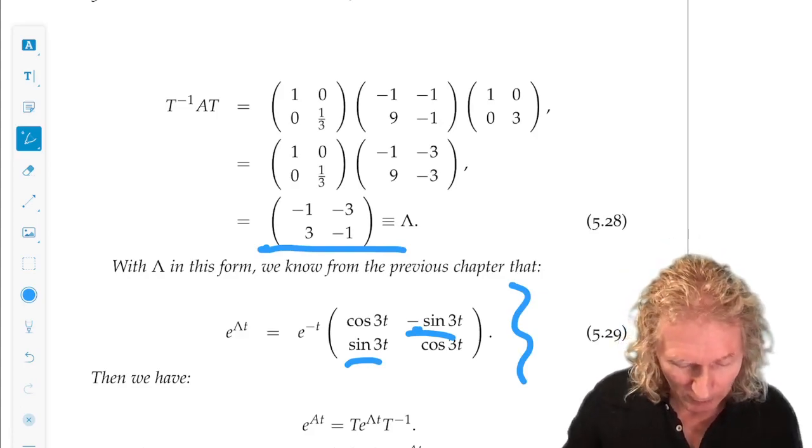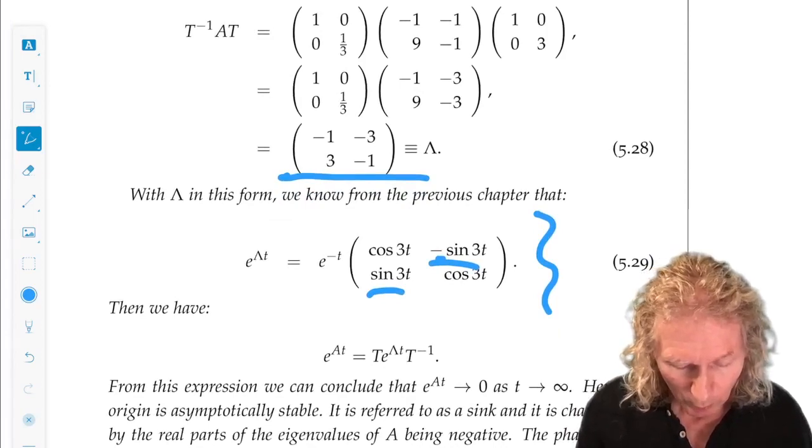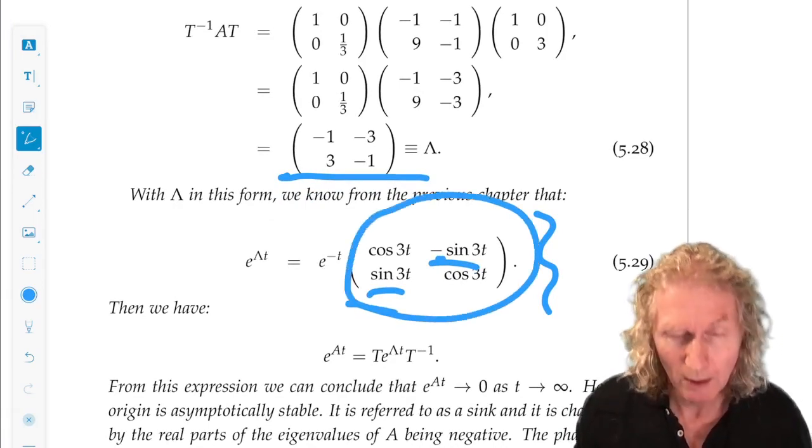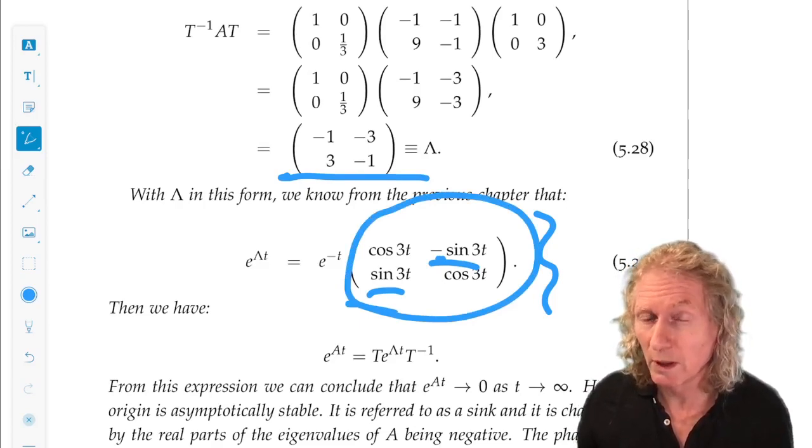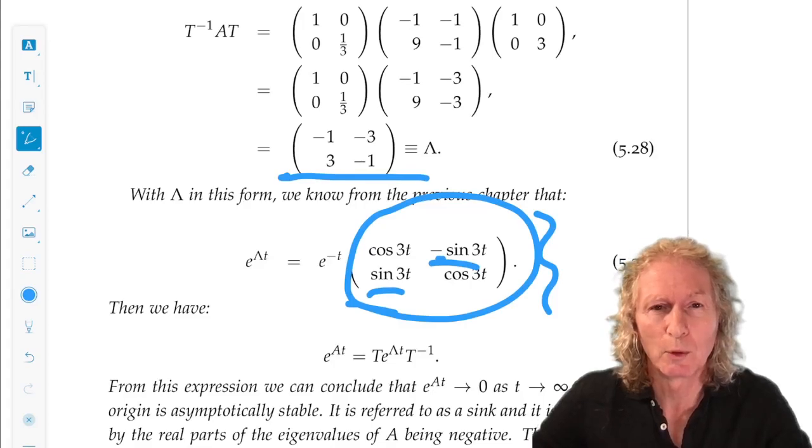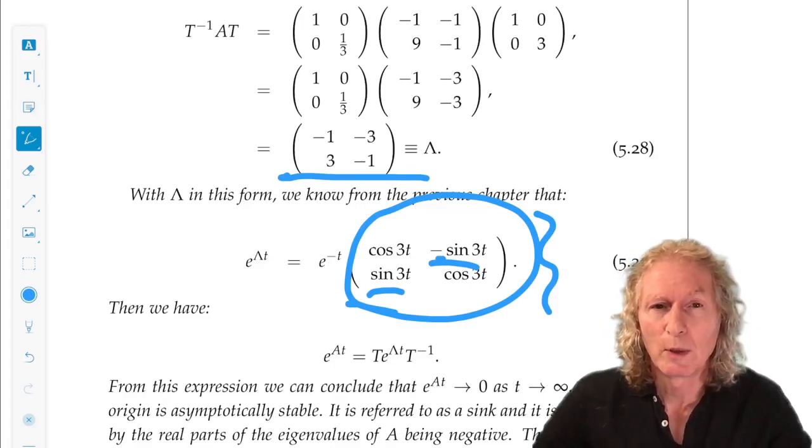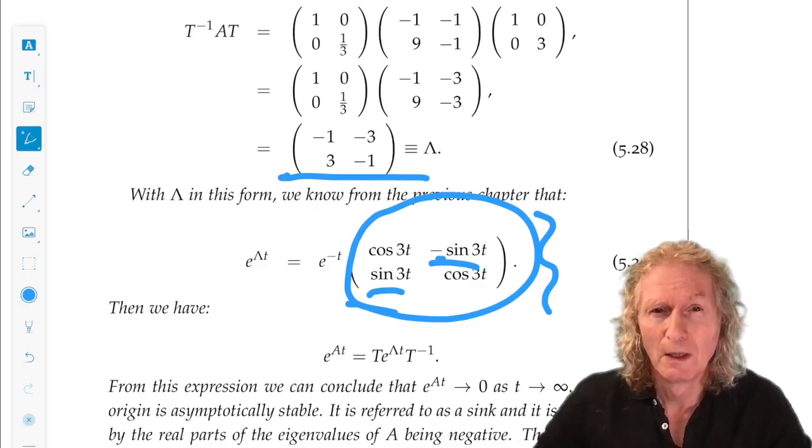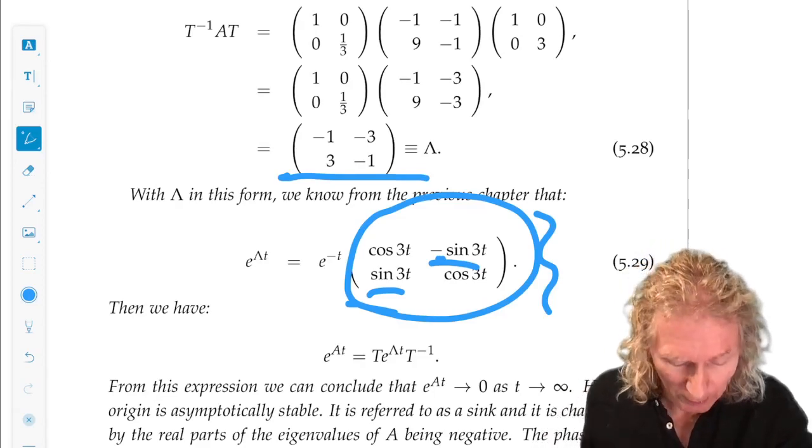Now, this is interesting because we can see immediately that as T goes to infinity, the 2 by 2 matrix is just going to be bounded. This is a rotation matrix, and you computed the flow in an earlier chapter for such an example. Go back and revise that. But, the entire matrix is going to go to zero as T goes to infinity. In this case, the origin is asymptotically stable.